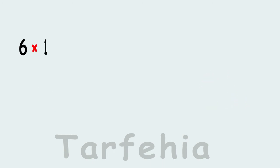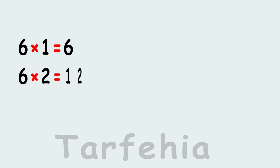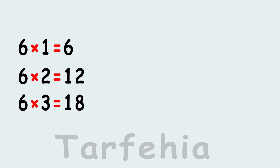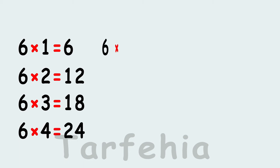Six times one equals six. Six times two equals twelve. Six times three equals eighteen. Six times four equals twenty-four. Six times five equals thirty.